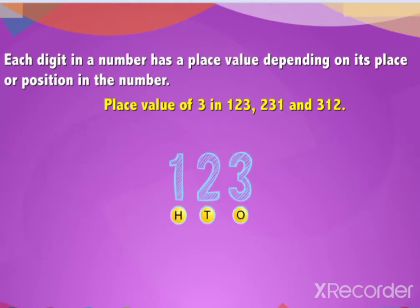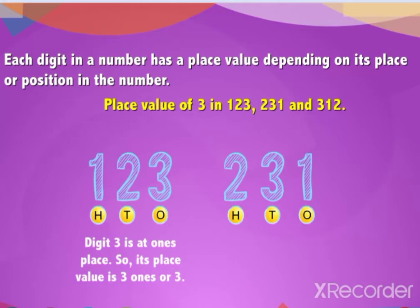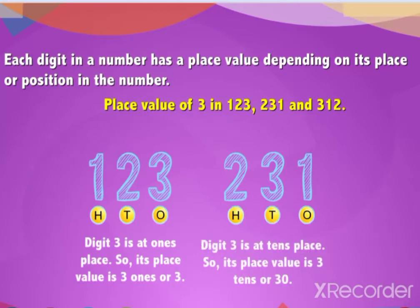In one hundred and twenty-three, digit three is at the ones place. So its place value is three ones, or three. In two hundred and thirty-one, digit three is at the tens place. So its place value is three tens, or thirty.